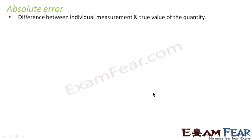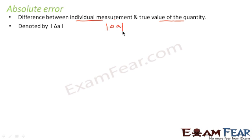Now let us discuss certain kinds of error. The first is absolute error. Absolute error is the difference between individual measurement and true value of a quantity — that is, the measurement which we take and the actual value of the quantity which we are measuring. It is normally denoted by modulus of delta A. Since it is modulus, it is always positive.